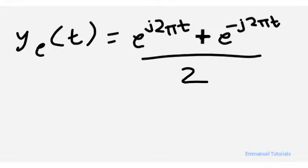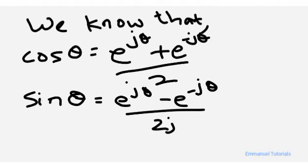For the even component, you know the formula is [e^(j2πt) + e^(-j2πt)] / 2, which is the way you find the even part. Similarly, for the odd part it will be [e^(j2πt) - e^(-j2πt)] / 2. We know that cos(θ) = [e^(jθ) + e^(-jθ)] / 2 and sin(θ) = [e^(jθ) - e^(-jθ)] / 2j. This is the trigonometric and exponential relation that we are going to use to solve this problem easily.